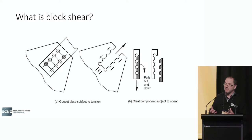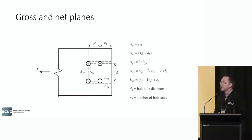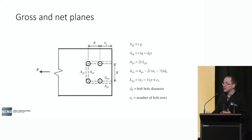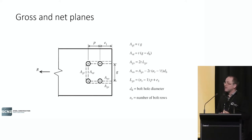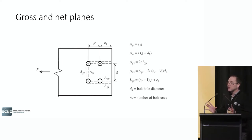Here are just two examples of block shear failure in steel connections. When it comes to looking at your models or design provisions for block shear, it's all to do with whether you take the gross or the net planes in your design equations. Illustrated here are the gross planes — excluding the bolt hole area — or you take the net plane, which is the net area between the bolt holes. Different design provisions around the world use different combinations of gross and net planes.